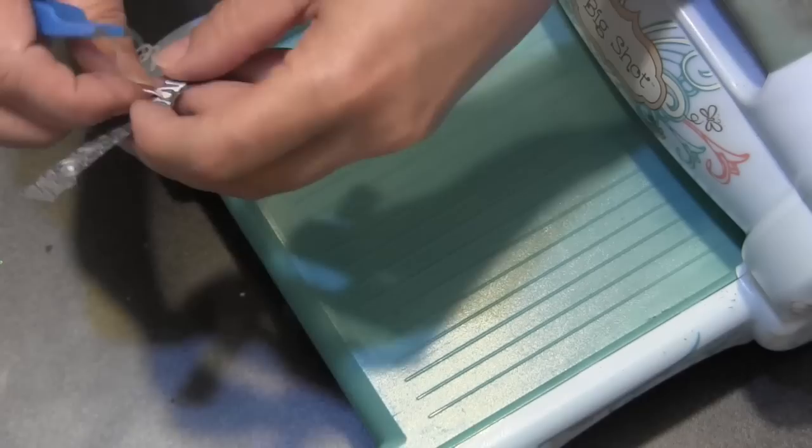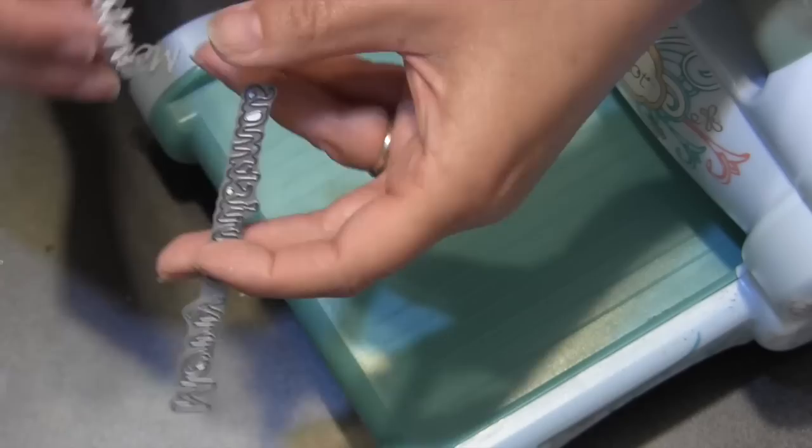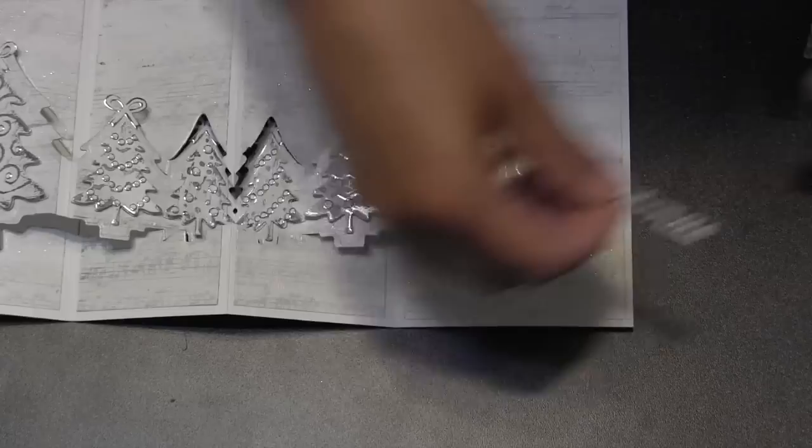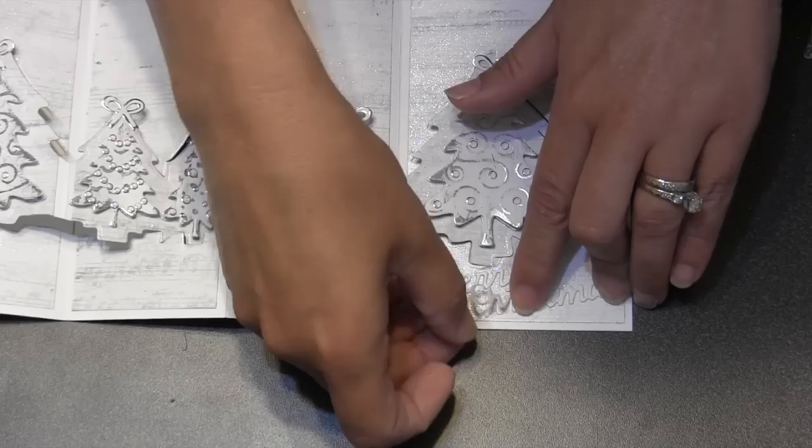And if the liner comes off while you're removing it from the die, no big deal. I'm about to add it to my card anyway. But what I'm going to do for this card is I'm actually going to use two of them stacked on top of each other so that I can get some additional dimension since I'm going white on white.